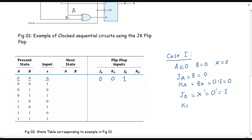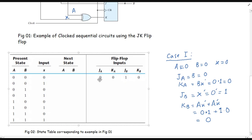For K_B = A·x̄ + Ā·x: A = 0 and x̄ = 1 gives 0·1 = 0; Ā = 1 and x = 0 gives 1·0 = 0; so K_B = 0 + 0 = 0. So for case 1: J_A = 0, K_A = 0, J_B = 1, K_B = 0.